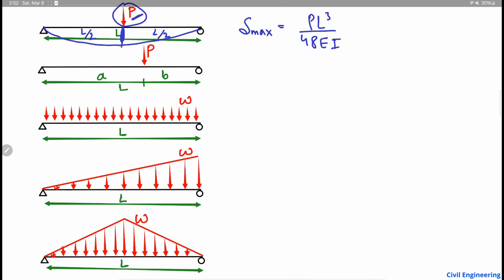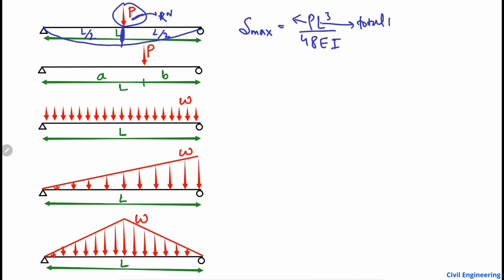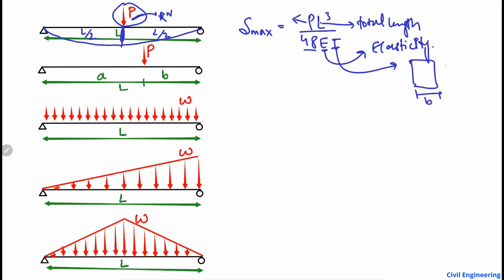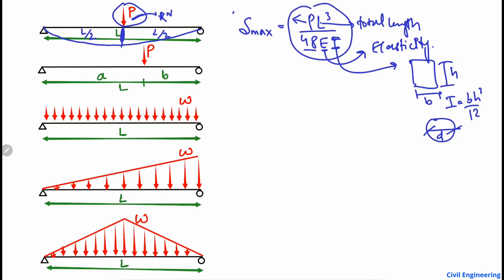P is the point load in kN or pounds depending on the code you are using. L is the total length of the beam. 48 is a constant. E is the modulus of elasticity of the material — for a reinforced concrete beam, you use the elasticity of the steel reinforcement. I is the moment of inertia: for a rectangular cross-section of width B and height H, I = BH³/12; for a circular cross-section, calculate I based on the diameter. By substituting all these values you find the maximum deformation at mid-span.